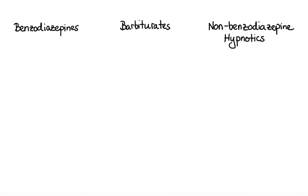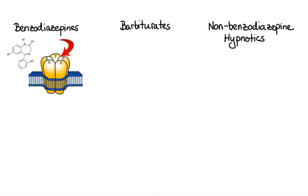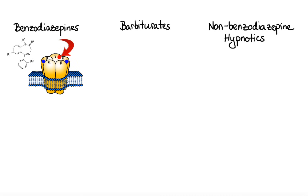Benzodiazepines get their name from their chemical structure, which includes a benzene ring fused to a diazepine ring. Their binding site appears to be the region between the alpha and gamma subunit on the GABA-A receptor. It is important to remember that benzodiazepines do not bind to the GABA recognition site located at the junction of the alpha and beta subunits, and thereby do not induce opening of the channel as directly as GABA. Instead, the binding of a benzodiazepine to its receptor site increases the affinity of GABA for the GABA binding site, leading to increased frequency of channel opening and increased influx of chloride ions at the post-synaptic cell.